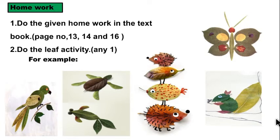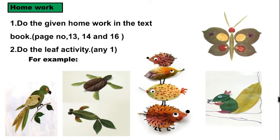Children, I hope you understood this lesson — creepers, climbers, shrubs, herbs and all the types of plants and activities. You have to do the activities in your textbook too. Now for homework: do the given activities in the textbook on pages 13, 14 and 16 — we have already done some. Refer to the video and write in your textbook. Also do the leaf activity — choose any picture, do it on paper and post it in the group. Write your name and send it as a photo.